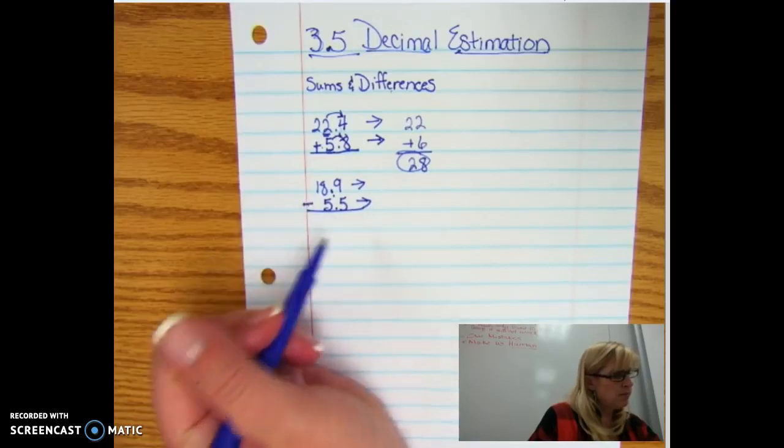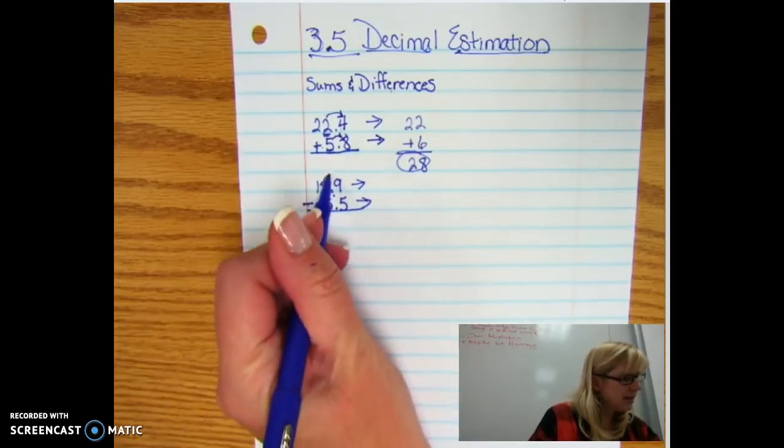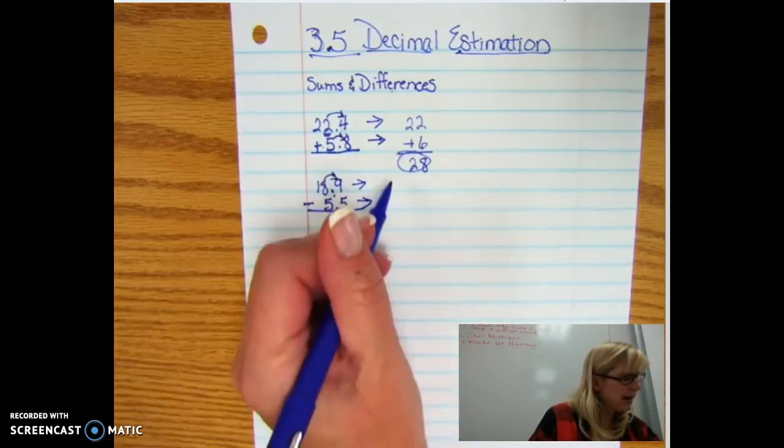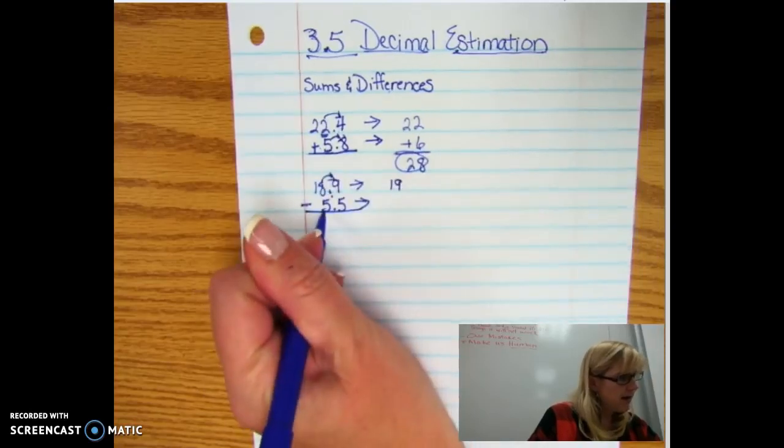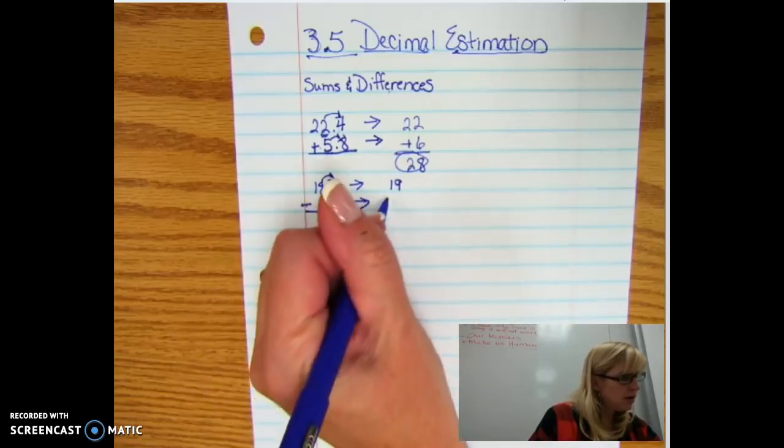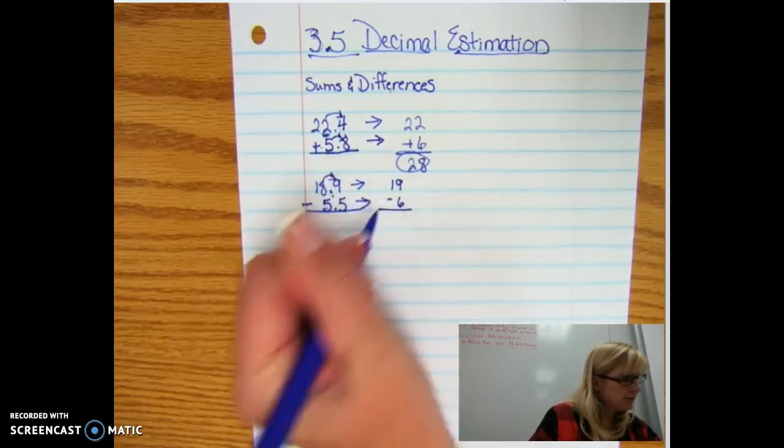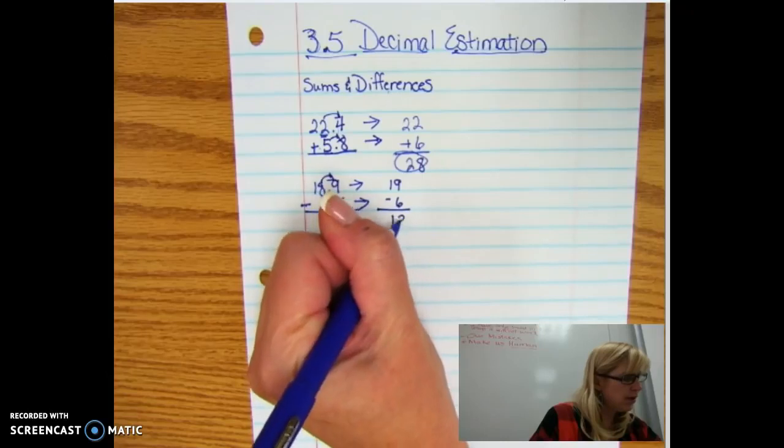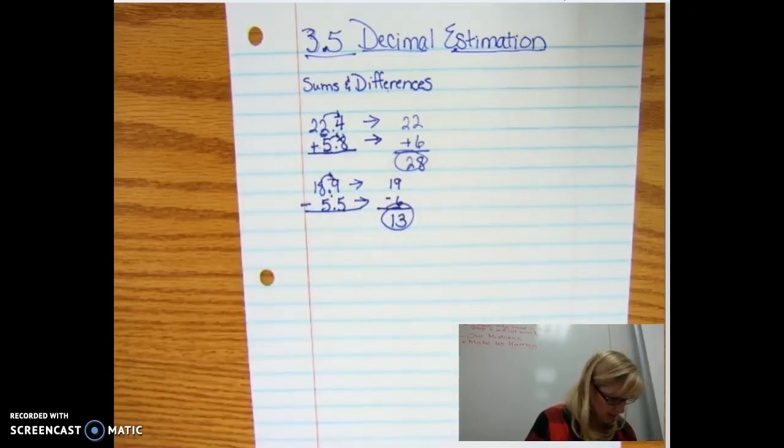Now with a subtraction, you do it exactly the same way. You look to the right, 18.9 rounds to 19, 5.5, this is 5, so 5 or greater we go up, so we're going to do minus 6. And so we're going to end up with a 13. Not a problem at all.